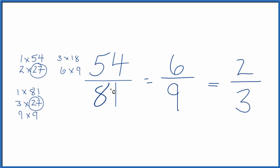This is Dr. B simplifying 54 over 81. You get two thirds. Thanks for watching.